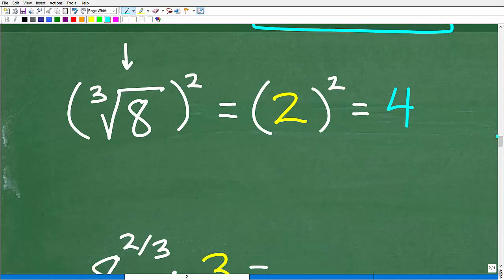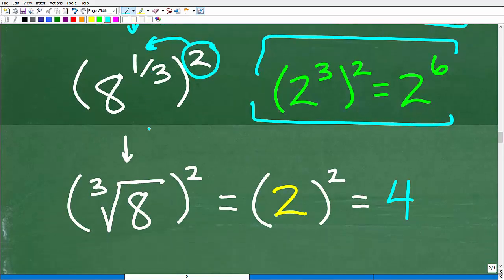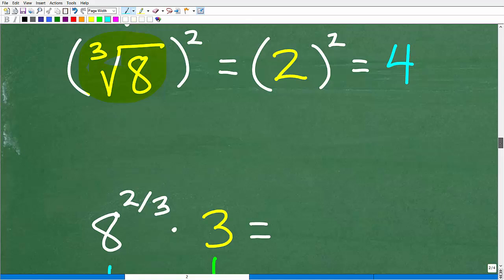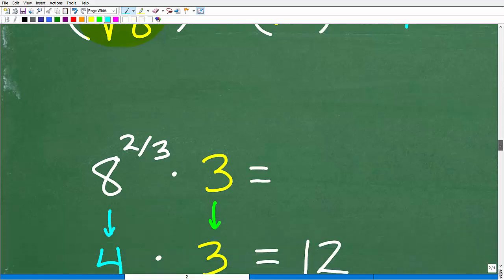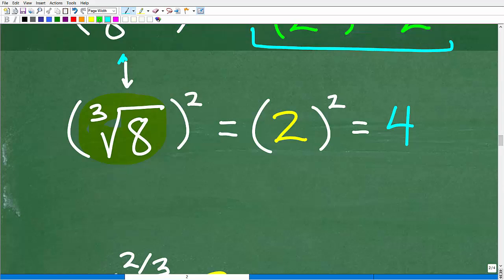So 8 to the 2/3 is the same thing as 8 to the 1/3 squared. I'm writing it this way just to keep you engaged with the relationship between rational exponents and radicals. So these two things are the same. The cube root of 8 is 2. So what number times itself 3 times is 8? That is 2. So let's go ahead and figure out the rest of the answer. I'm kind of getting ahead of myself here.